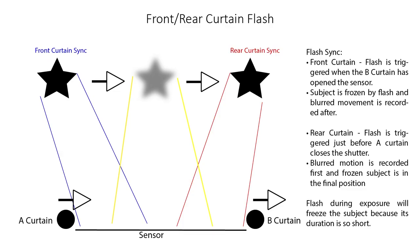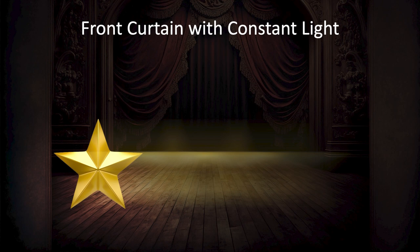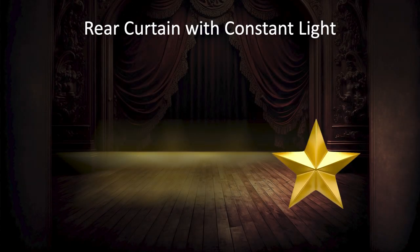Another thing to understand is front and rear curtain sync with a flash. When you add a flash to your long exposure: front curtain sync basically fires as soon as the B curtain leaves the A curtain and the sensor is completely open. Rear curtain fires an instant just before the A curtain catches up with the B curtain. How we use front curtain and rear curtain sync: with front curtain sync, your subject will be frozen first and then the streak line will appear. With rear curtain, the streak line appears first and then your subject is frozen. Rear curtain makes a lot more sense for us because we read from left to right in Western culture — rear curtain gives you that illusion of speed: blur behind, then the capture of the moment.